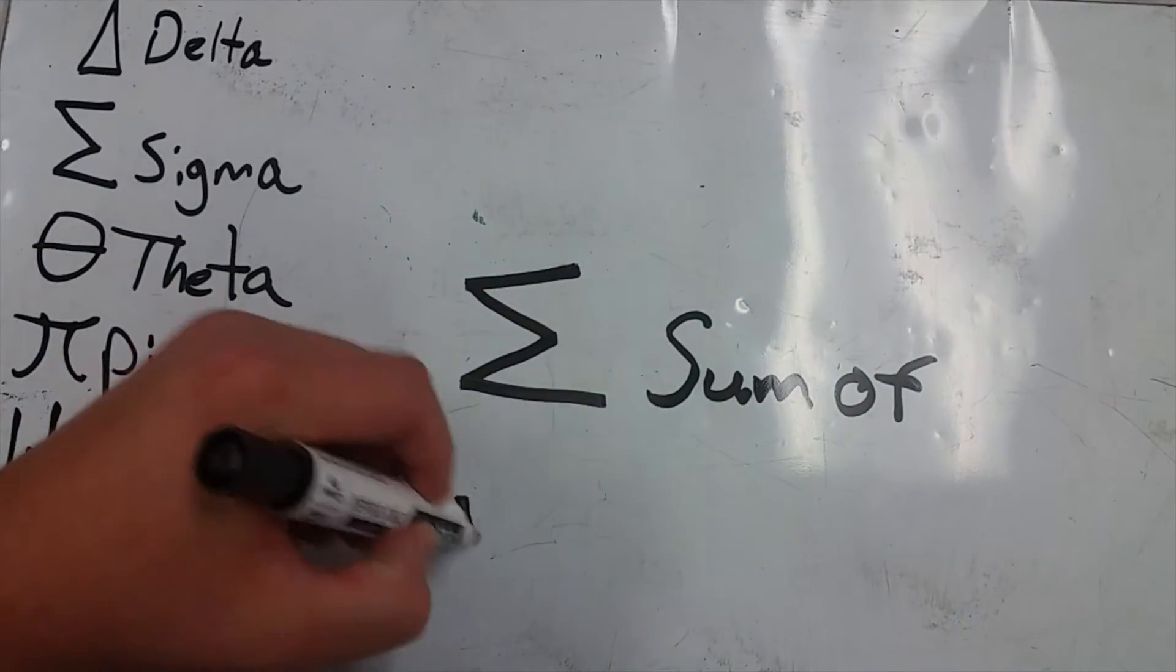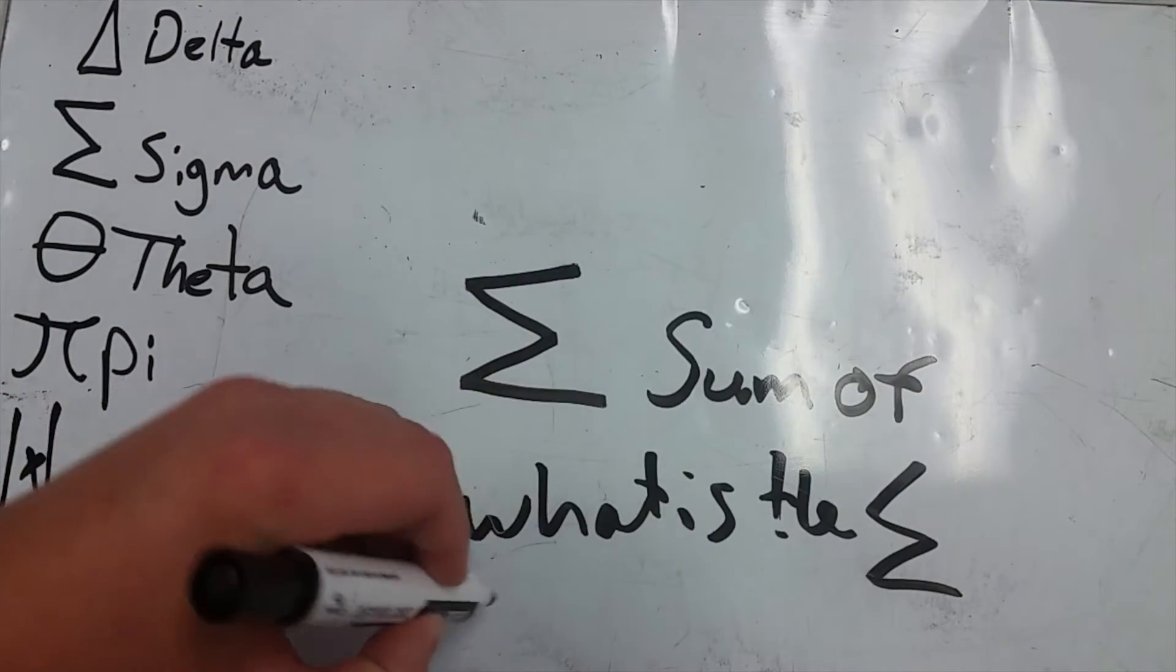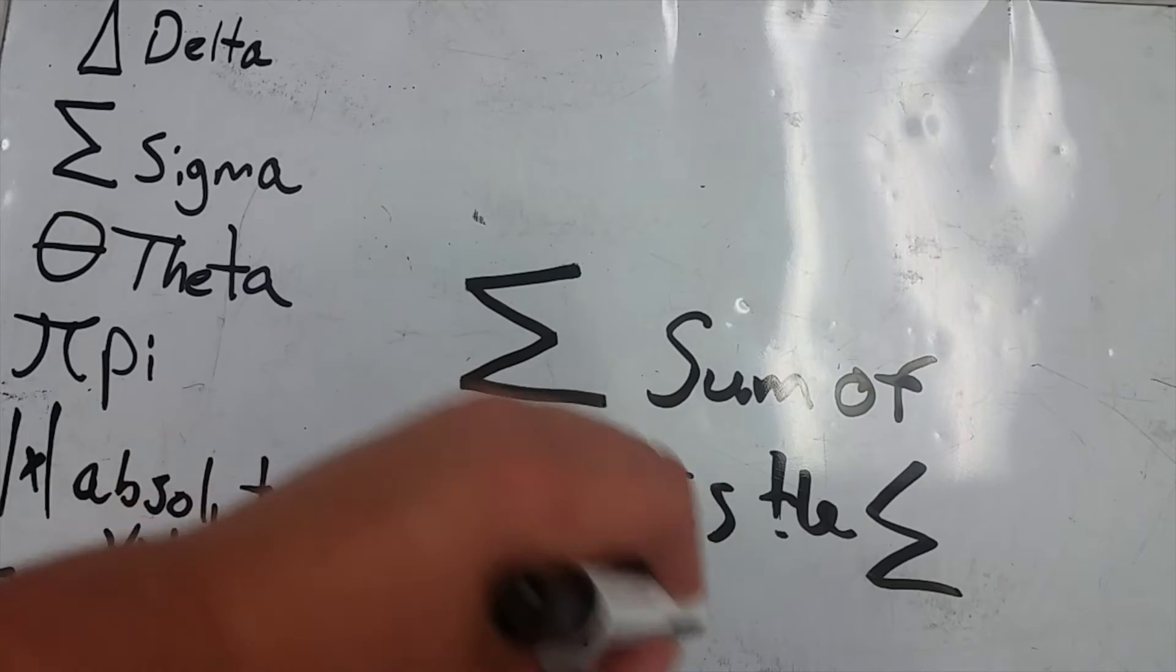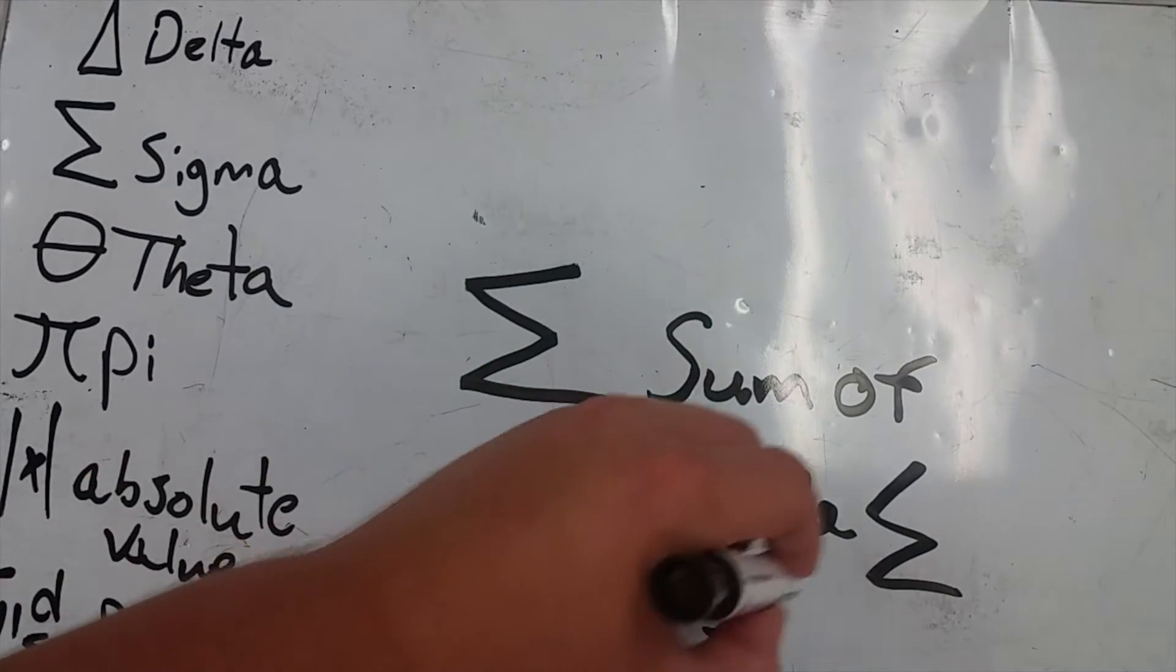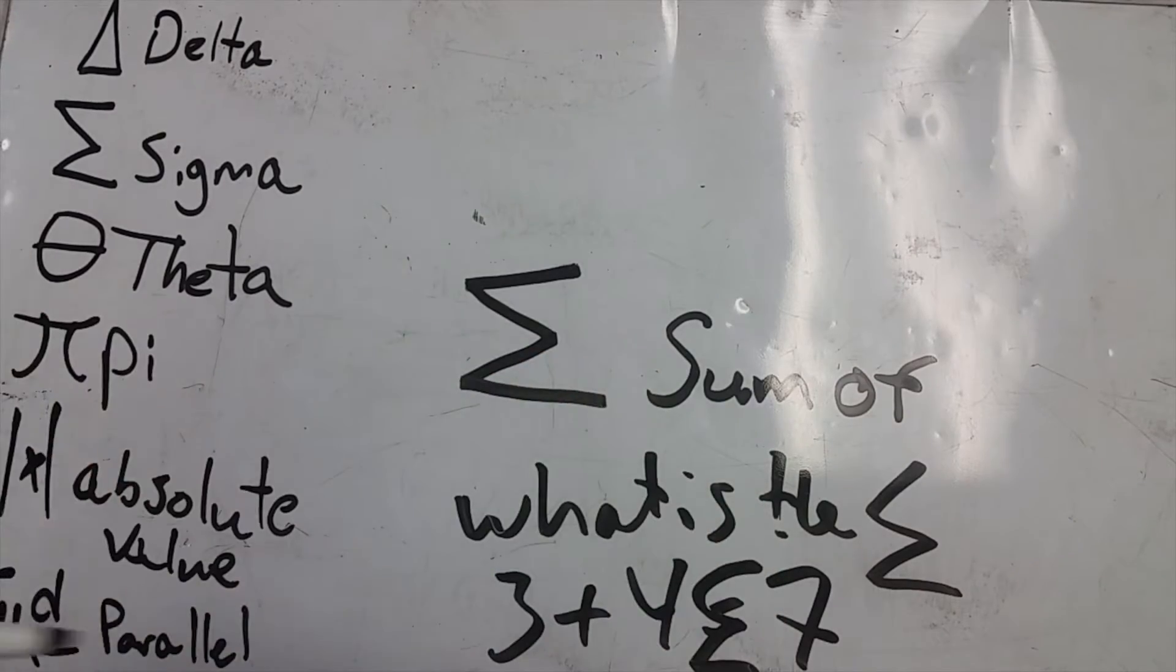So like what is 3 plus 4? That is 7. Sigma 7.